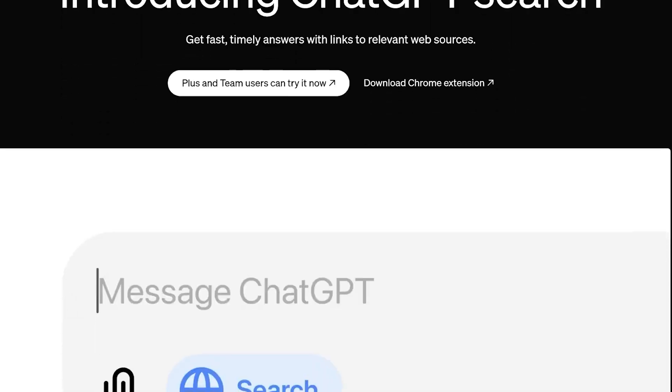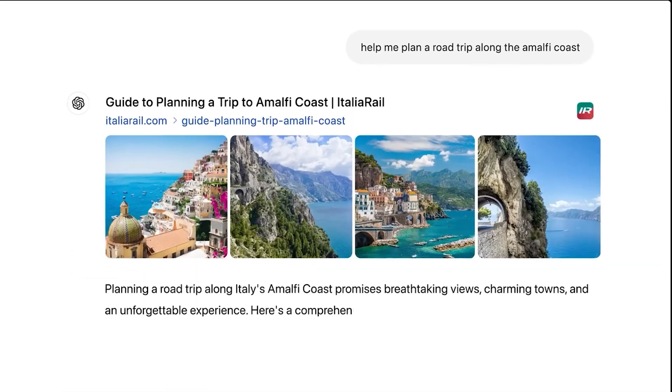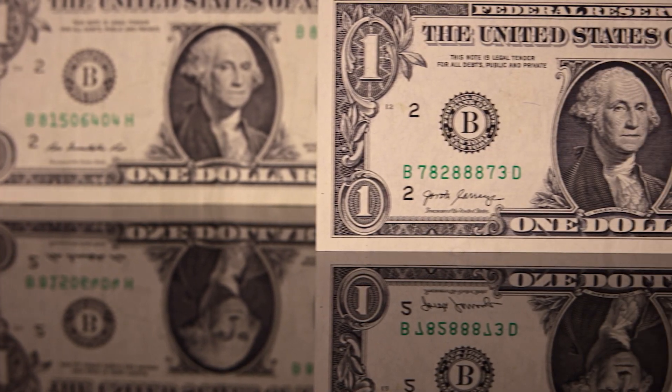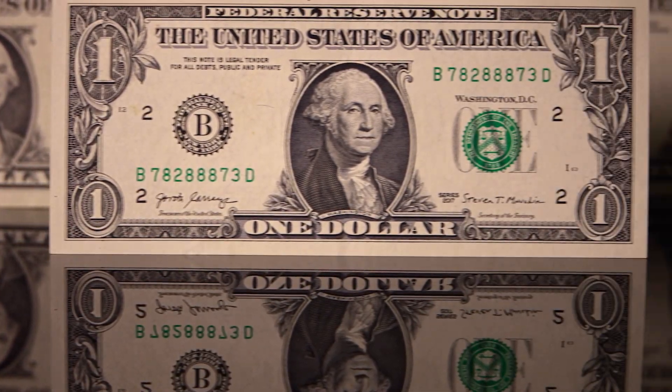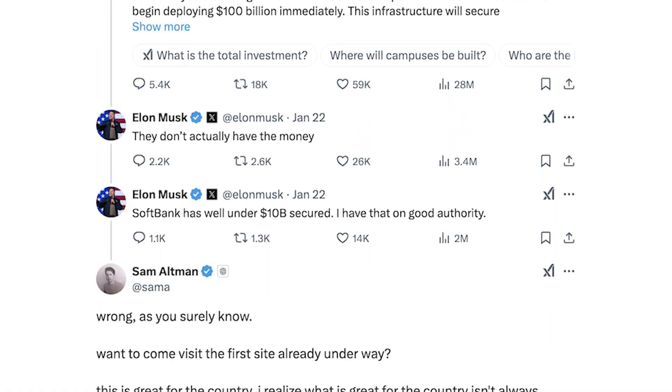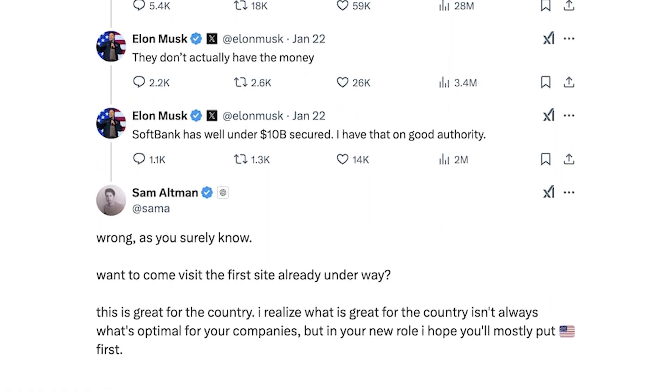For every supporter of the Stargate Project, there is a critic questioning its necessity, cost, and direction. One of the most vocal skeptics is none other than Elon Musk. Musk, who co-founded OpenAI but has since parted ways, claims that SoftBank, the primary financial backer, has secured well under $10 billion of the $500 billion needed. He's taken to his social platform X to voice his concerns, sparking a heated back and forth with Sam Altman.